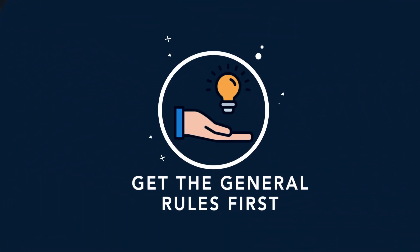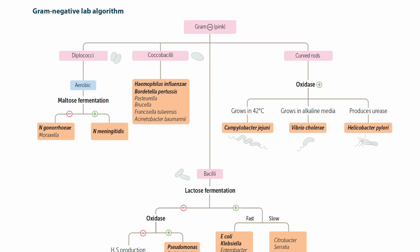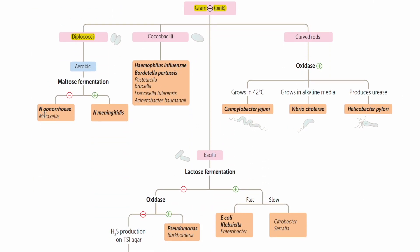Tip number two is to get the general rules first. You need to learn the different classifications and principles of microbiology. For example, in Microbiology Made Ridiculously Simple (MMRS), it notes that almost all gram-negative bacteria are either rods or pleomorphic, except for only two groups of cocci: Neisseria and Moraxella. Switching back to First Aid, there's a nice flowchart for the classification of gram-negative bacteria, and seeing it this way makes it much easier to picture how several microbes are similar to or different from one another.